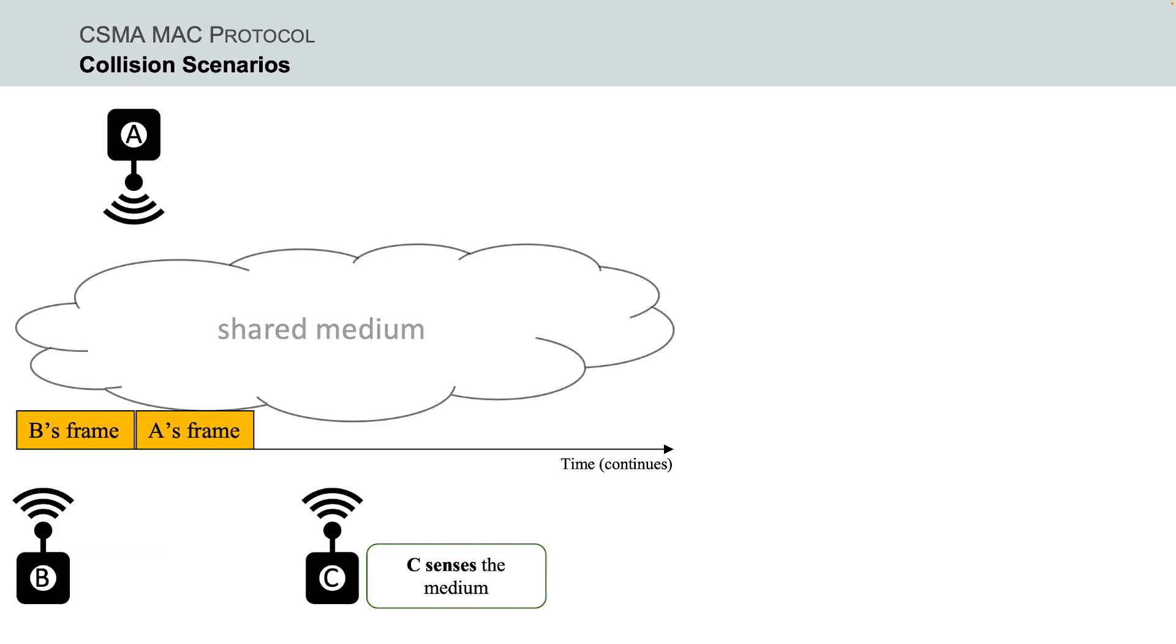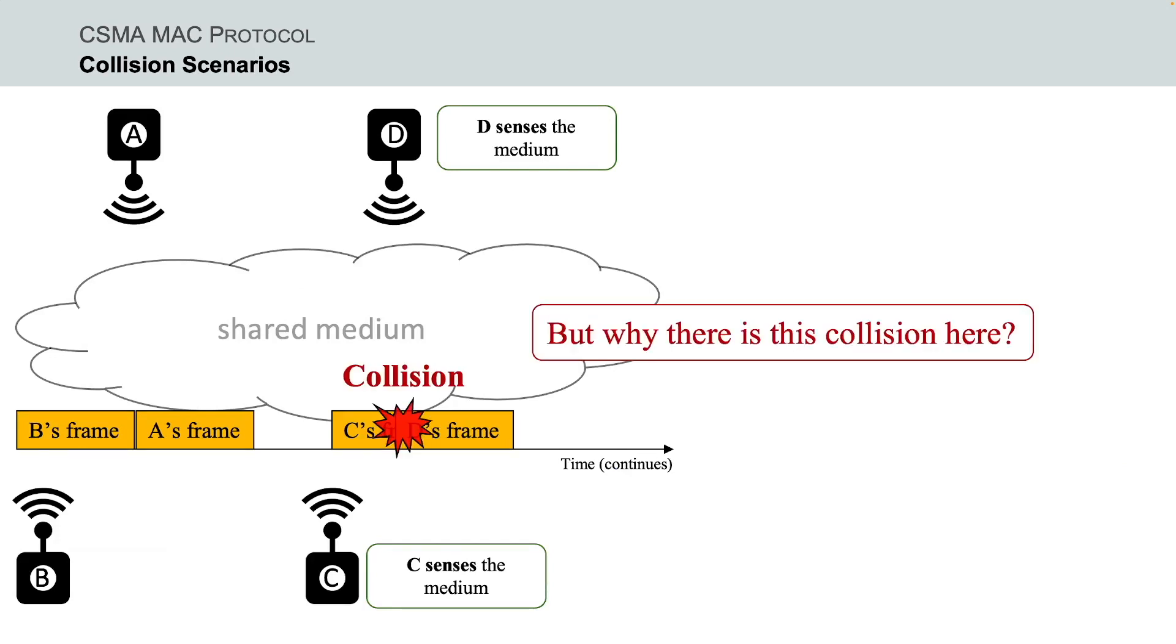Indeed, there are scenarios where the transmissions of two nodes may collide, even though the two nodes perform the carrier sense mechanism before transmitting their frames. Let us now see a few scenarios to understand why there might be a collision in CSMA.